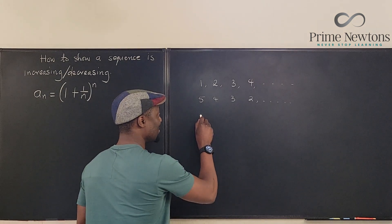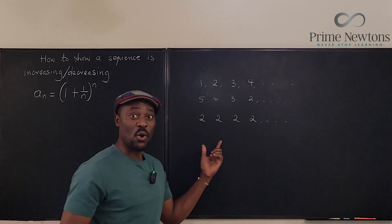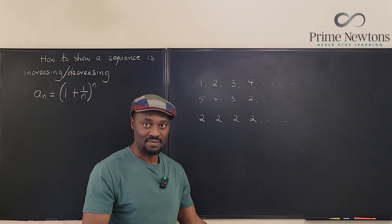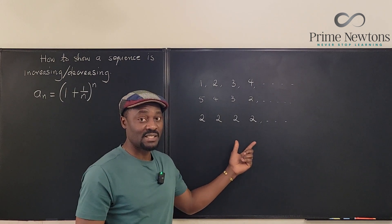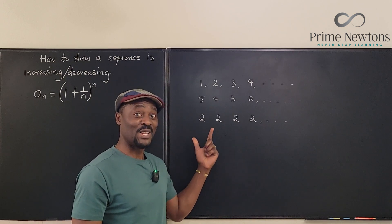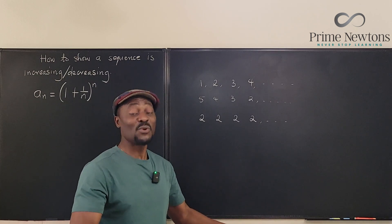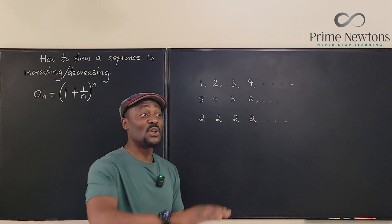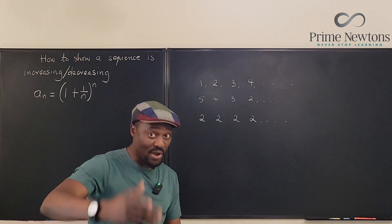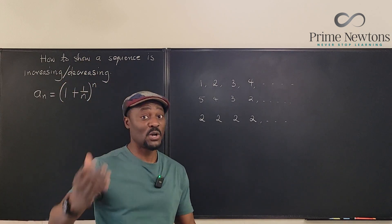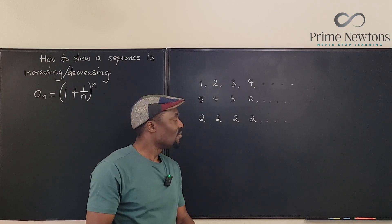The term decreasing or increasing can be confusing because if I write the sequence 2, 2, 2, 2 going on forever, this is also a monotone sequence — called a monotone non-decreasing or monotone non-increasing sequence, or simply a monotonic sequence. As long as it is not going up and down, it is referred to as monotonic. If it is going up and down and you can't predict the direction, then it is not a monotonic sequence.